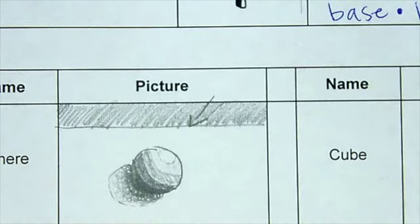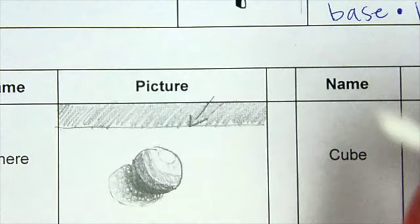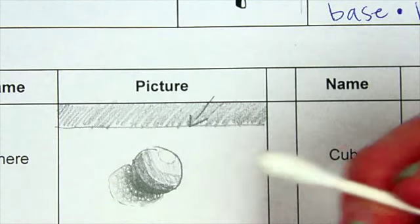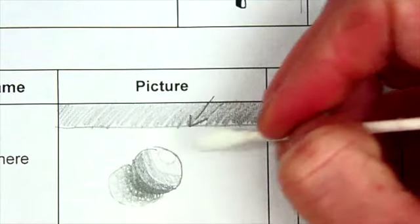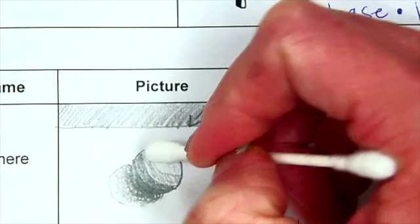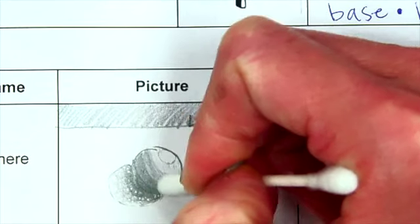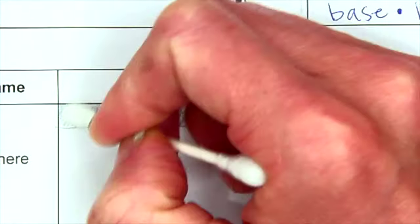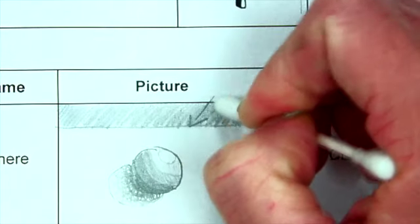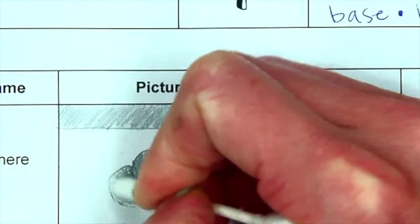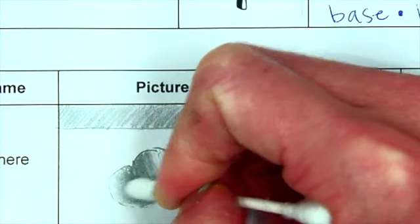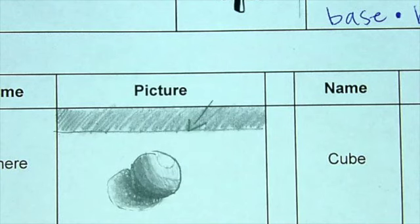Your last step is going to be to take your q-tip and blend. We're always going to start with the lightest area but not white. So I'm going to start right here and blend that. I'm going to blend my background, and then I'm going to blend my shadow. I'm going to start at the lighter area and go to the darker area.